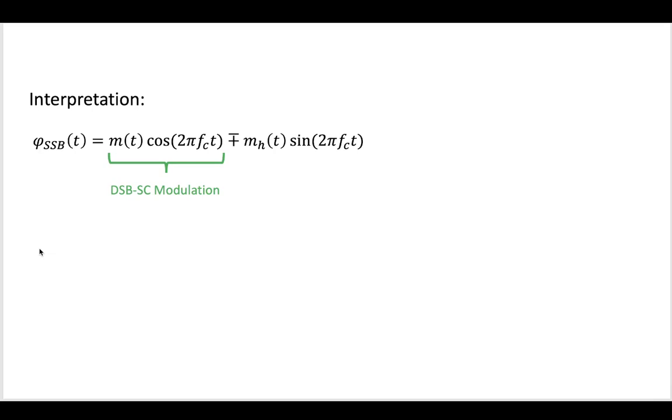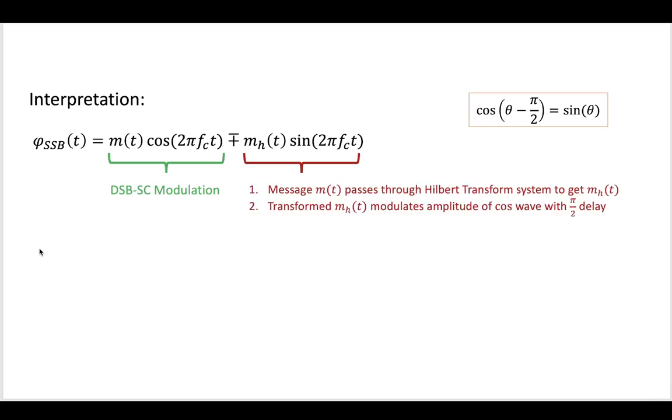Now what is the second part of this signal? The second part is a message that has been shifted and modulated by π/2. We can see this by the fact that when the message passes through the Hilbert transform system, you get this mh term. This is a message that's gone through a phase delay of π/2.